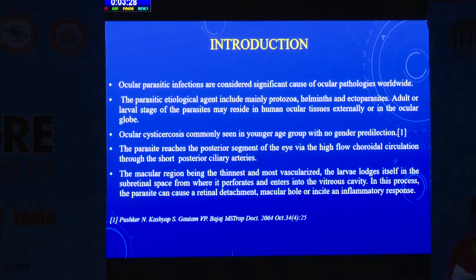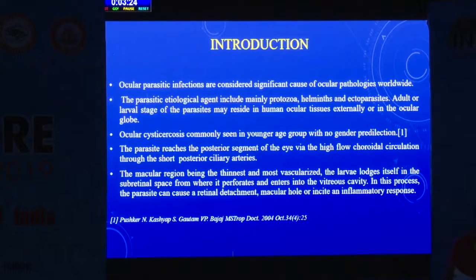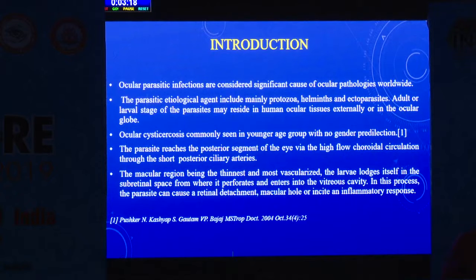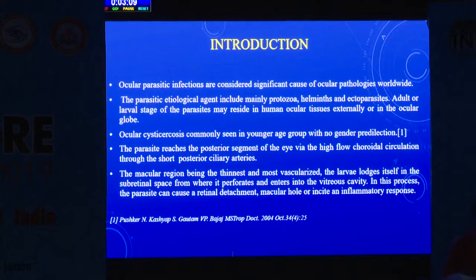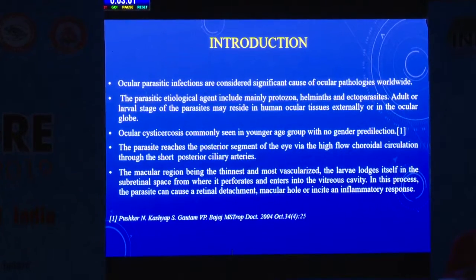Oculocysticercosis is commonly seen in younger age groups with no gender predilection. The parasite reaches the posterior segment of the eye via the high-flow corridor circulation through the short posterior ciliary arteries. The macular region, being the thinnest and most vascularized, the larva lodges itself in the subretinal space, from where it perforates and enters into the vitreous cavity. In this process, the parasite can cause retinal detachment, macular hole, or incite an inflammatory response.